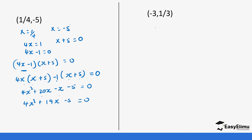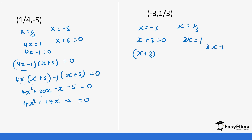And then we have x equals negative three and x equals one third. So x plus three equals zero and 3x minus one equals zero. So we expand using this: x into bracket (3x minus one), then plus three into bracket (3x minus one), equals zero.